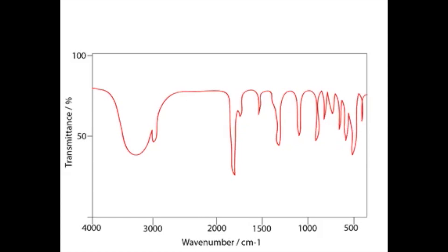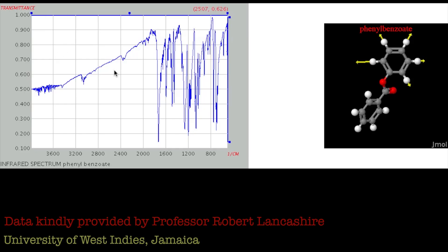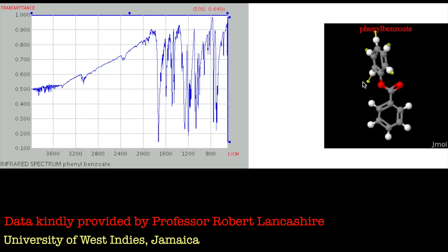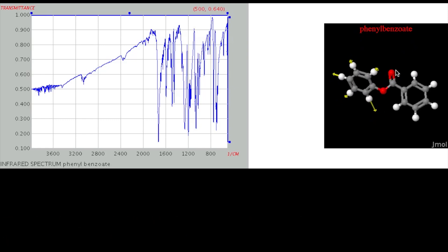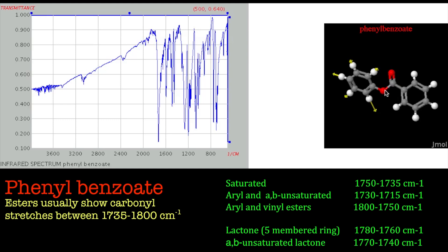Okay, let's have a look at this. The next one we've got is phenyl benzoate, which is an ester. Let's just put it in some position where we can see the ester. So you've got your carbonyl stretch here, you've got your oxygen there, so you've got a nice carboxylate group.